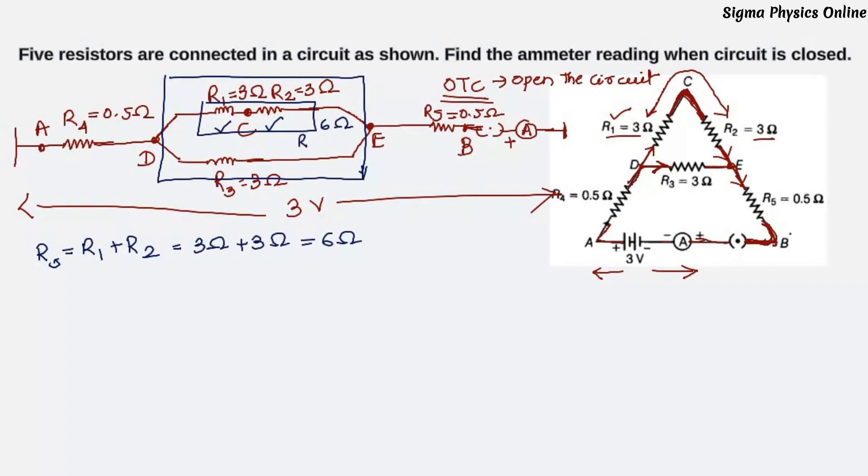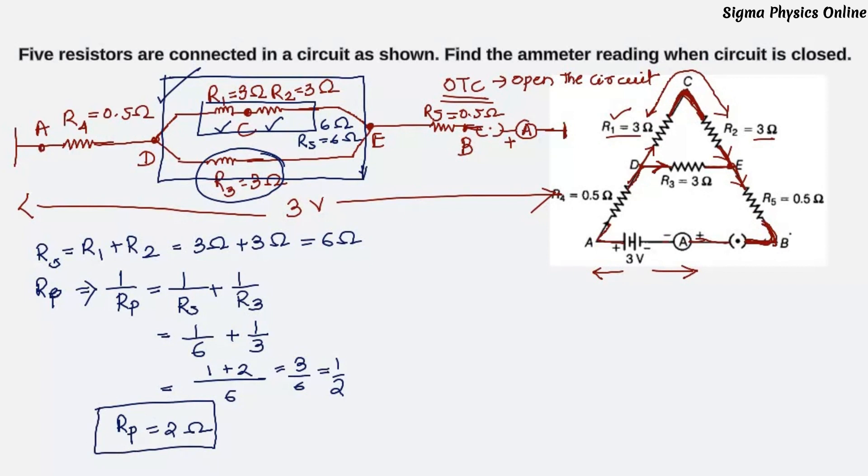Now, this RS which is 6 ohm, it is in parallel with R3 which is 3 ohm. Now we have to solve this branched part. Let me write RP—RP means the parallel circuit. The formula is 1 by RP is 1 by RS plus 1 by R3. RS we got it as 6 and R3 is 3. The LCM is 6, it is 1 plus 2 which is 3 by 6 that is 1 by 2. So, RP will be 2 ohm. The equivalent resistance of this branched parallel circuit is 2 ohm.